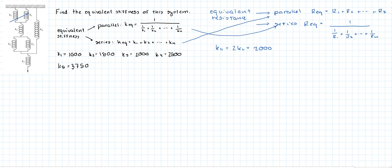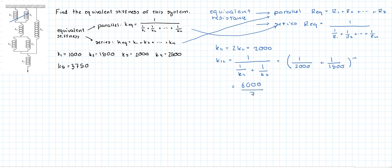Then we're going to combine k_11 and k_2, and they're in series, so we'll call it k_12. That is equal to the inverse of (1/k_11 + 1/k_2), which is (1/2000 + 1/1500)^(-1), and that gives you 6000/7.